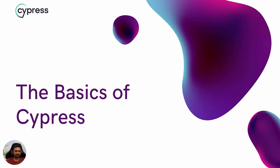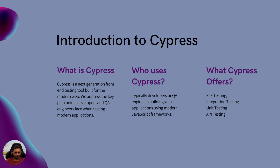Hello everyone, my name is Virg and today we are going to see the basics of Cypress. So first of all, let's see what Cypress is. Cypress is basically a next-generation front-end testing tool built for the modern web. When we say modern web, it means applications designed using modern JavaScript-based frameworks.